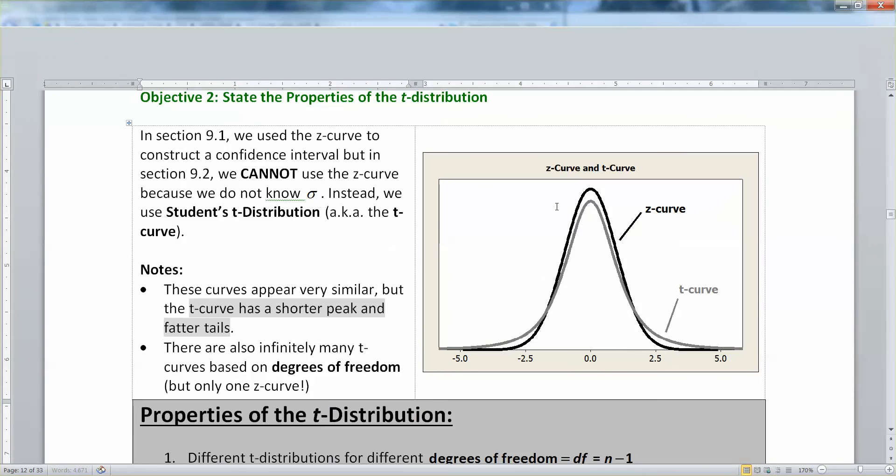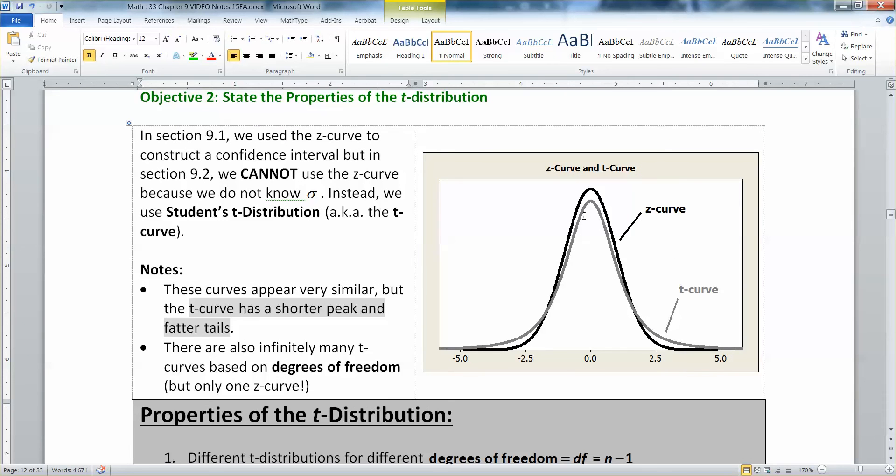I've labeled them for you so you can see. The black curve is that taller one. That's the Z curve, the best curve, the curve we would love to use if we could, but we can't. And then there's the T curve.